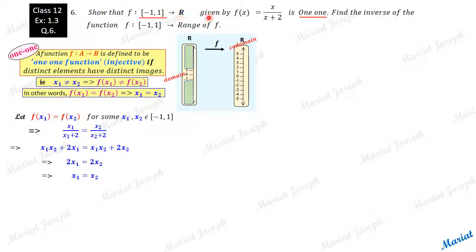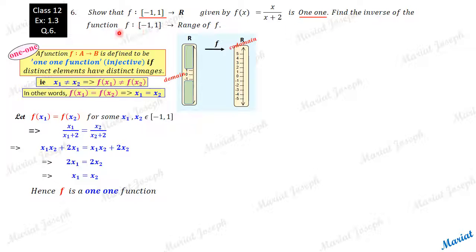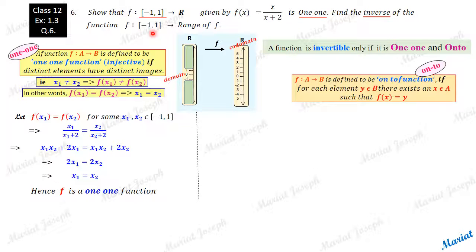Hence this function f follows the definition of 1-1-ness, so this function is 1-1 — we have proved it. We were asked to show that it is 1-1, and yes, the function is a 1-1 function. Now the next part of the question is to find the inverse of this function. Though we are not asked to prove it is onto, we need to check whether it is onto before finding the inverse.